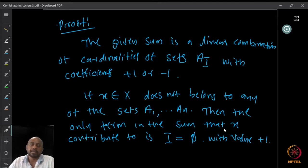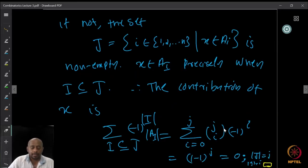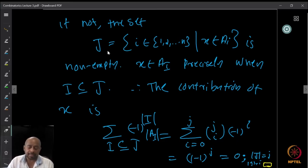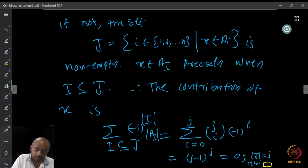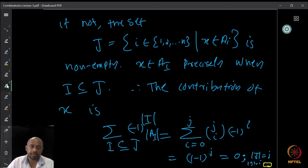Now we look at elements which appear in at least one of the Aᵢ's. Suppose element x appears in at least one Aᵢ. Define J to be the collection of indices i such that x is in Aᵢ. This is a non-empty set. Now, x belongs to A_I precisely when I is a subset of J, by definition of J. So the contribution of x to the sum is the sum over all I ⊆ J of (−1)^|I| · |A_I|.